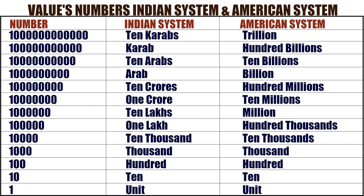One after 6 zeros: called as 10 lakhs in Indian system, million in American system. One after 5 zeros: called as 1 lakh in Indian system, hundred thousands in American system.